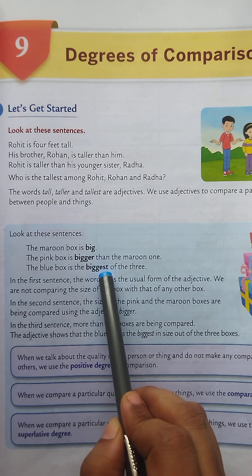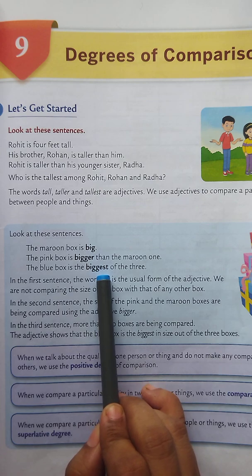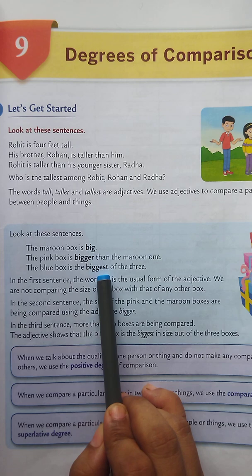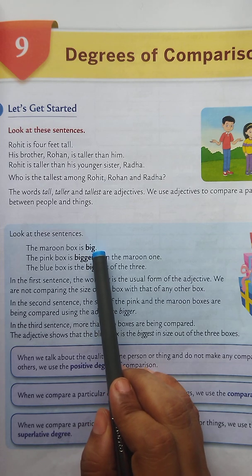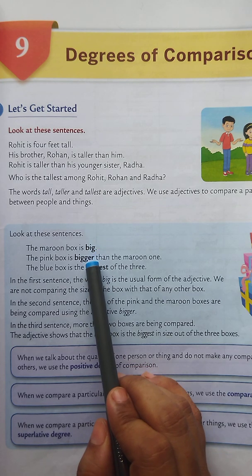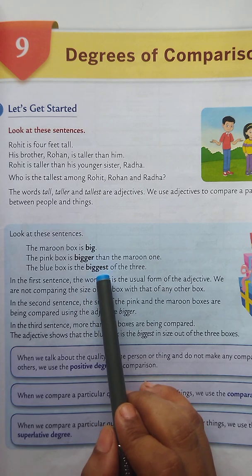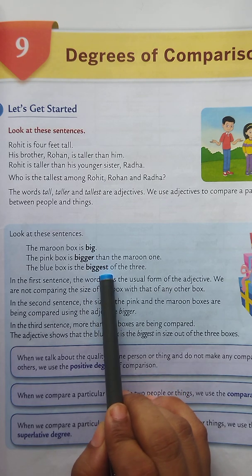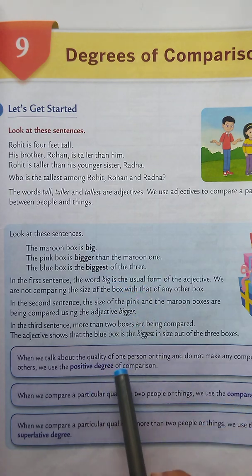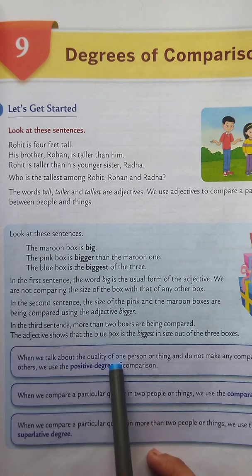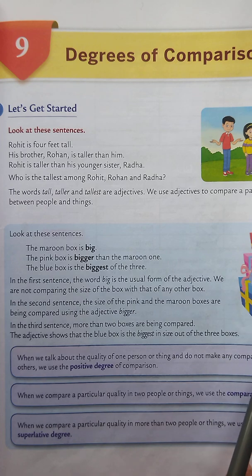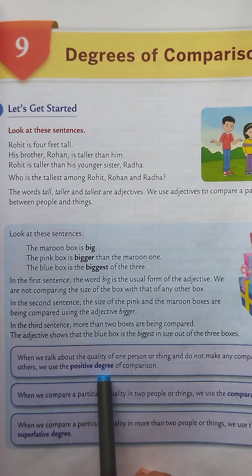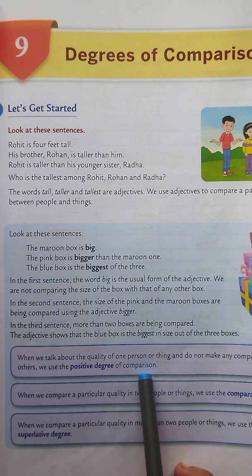We use adjectives to compare persons or things, and when we make these comparisons, the adjectives change in form. In the first sentence we used the positive degree, in the second sentence the comparative degree, and in the third sentence the superlative degree. When we talk about the quality of one person or thing and do not make any comparison with others, we use the positive degree of comparison. The positive degree is used with one person or one thing only.